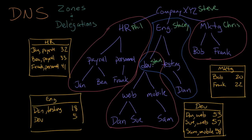Let's say a phone call comes in at the top. Steve picks it up, and the person is calling for Frank in personnel. Steve says they're asking for someone in personnel, and he knows personnel is part of HR, so he hands off the call to Phil. Phil consults his list and finds Frank in personnel at extension 41, and directs the call there.